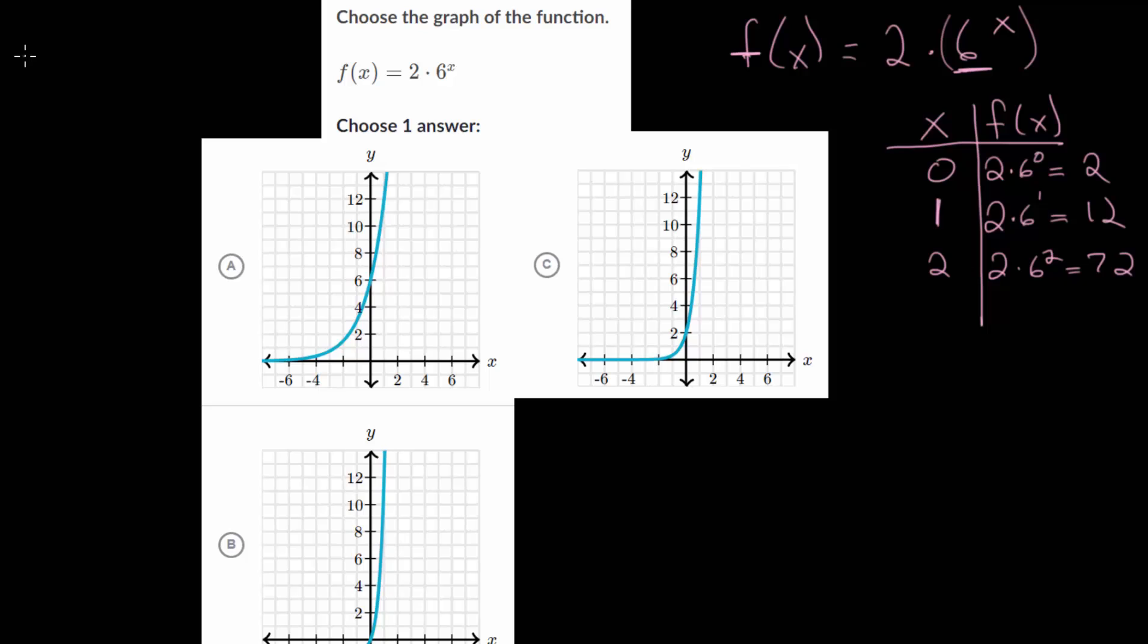The general equation for these is g(x) equals a multiplied by b to the x, where a is that starting value, and b here is the base, or either the growth rate or the decay rate of your exponential function.